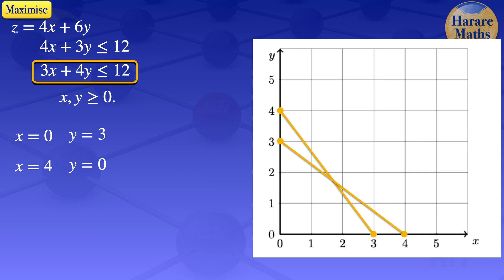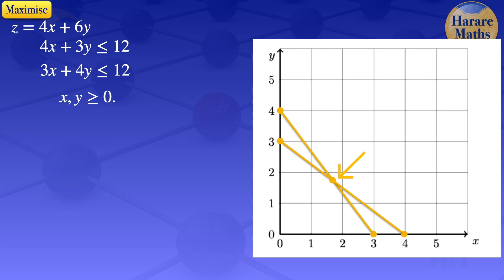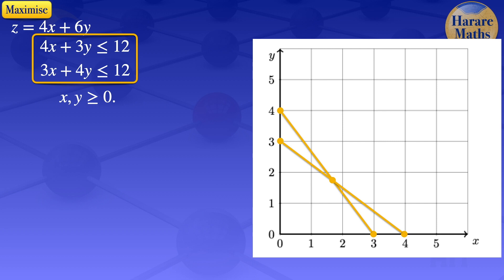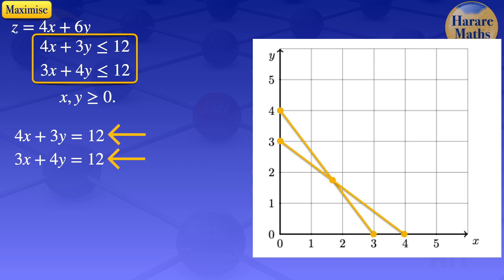I've now drawn the lines corresponding to the constraints. There is an intersection of those two lines, which I'll indicate with a dot. To find the coordinates of that intersection point, I consider the two equations: 4x plus 3y equals 12, and 3x plus 4y equals 12. Solving those two equations simultaneously, I obtain x equals 12 divided by 7 and y equals 12 divided by 7.